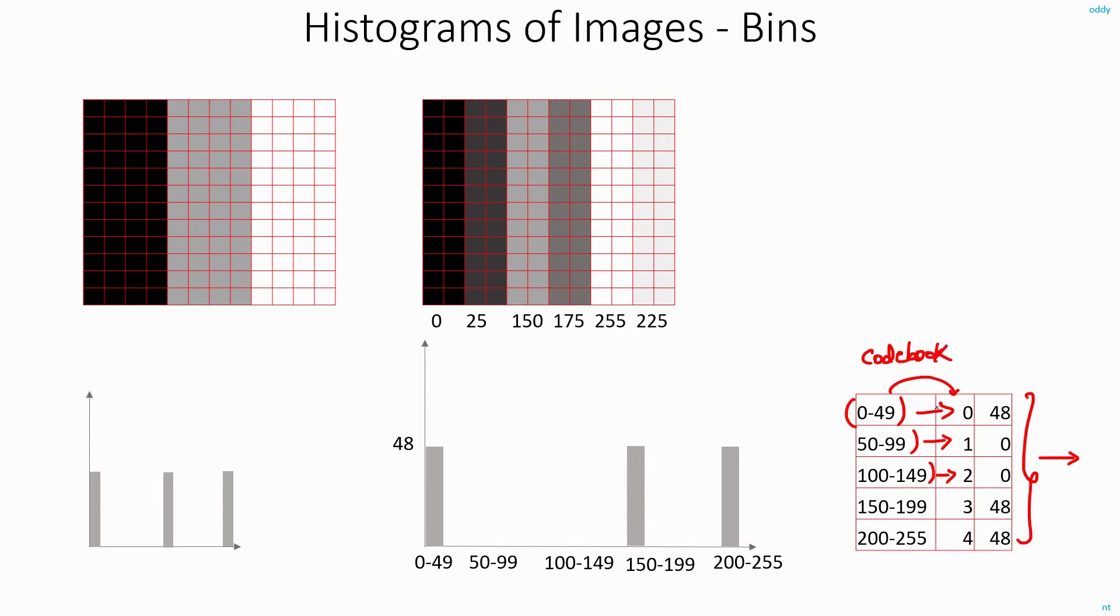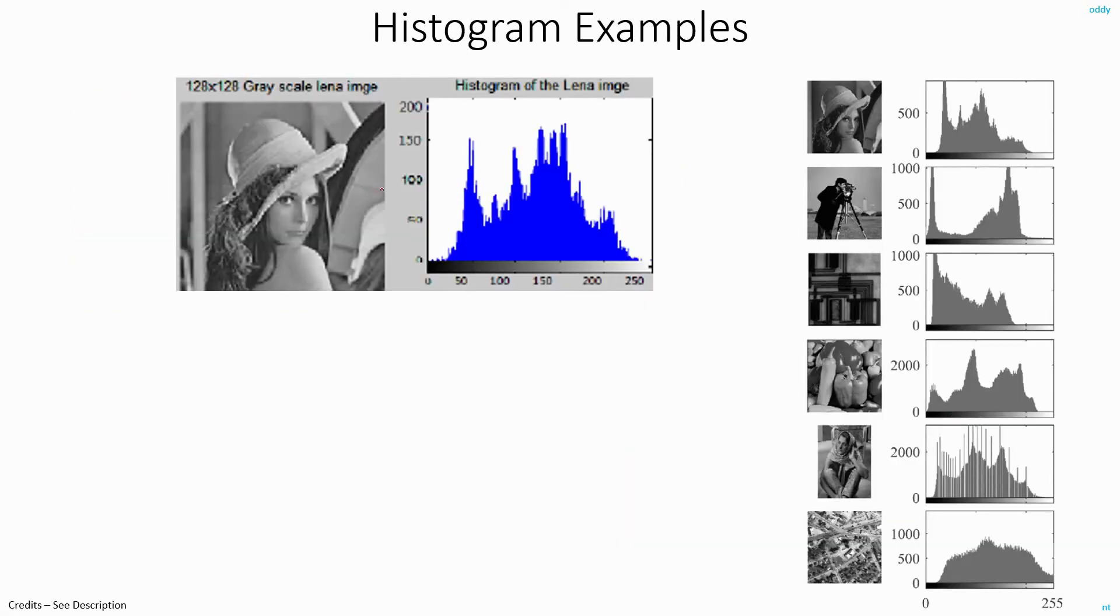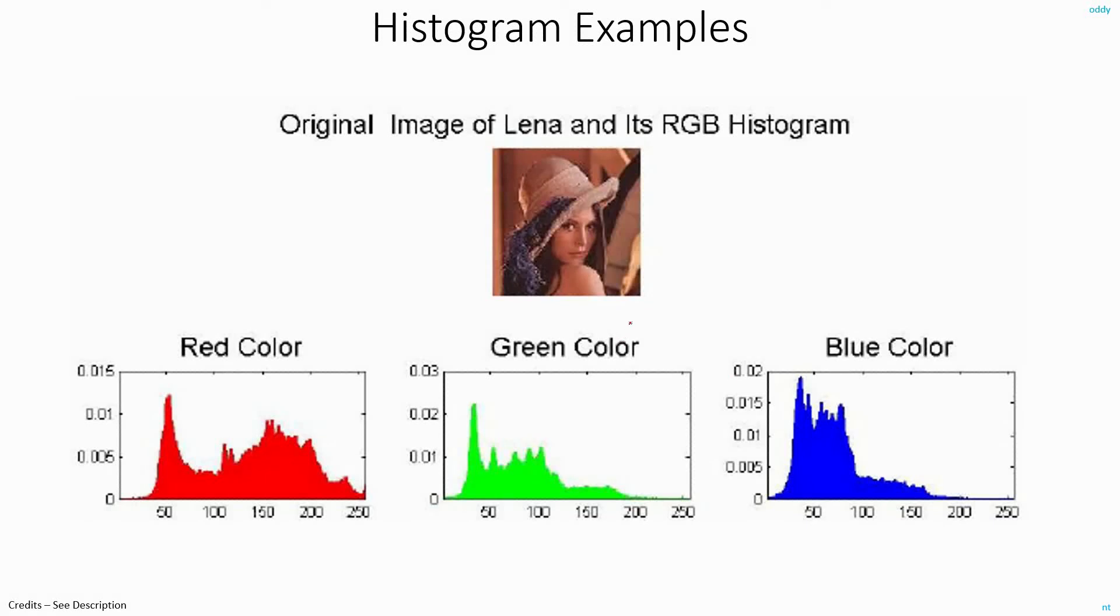So this is another concept related to histogram of an image using the bins. Now some real examples, this is the histogram of the lena image, grayscale lena image 128x128. And on the right, you can see the histogram values for different images. And if you take the histogram for a colored image, what you can do is, you can separate out the RGB channels and plot the histogram values separately. So this is the discussion about histograms.